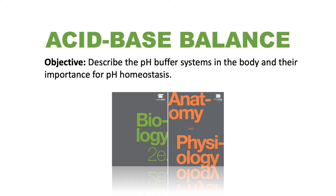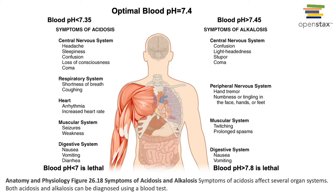In this video I will describe the pH buffer systems in the body and their importance for pH homeostasis. The pH of human blood is typically about 7.4. The optimal blood pH range is between 7.35 and 7.45.